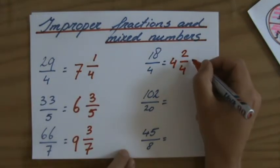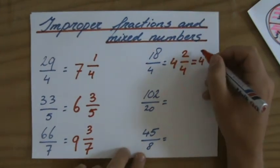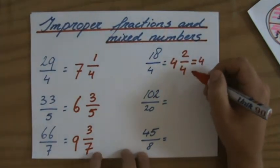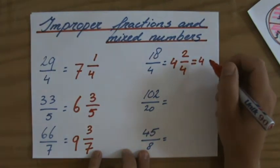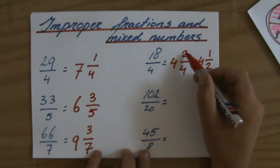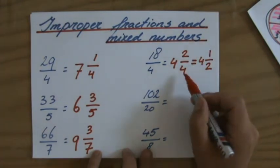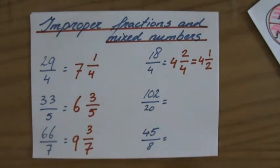It's not, because I have to simplify that. What is the common factor between 2 and 4? The common factor is 2. So it's 1 over 2. I can divide the numerator and the denominator by 2. 2 divided by 2 is 1. 4 divided by 2 is 2. So it's 4 and a half.